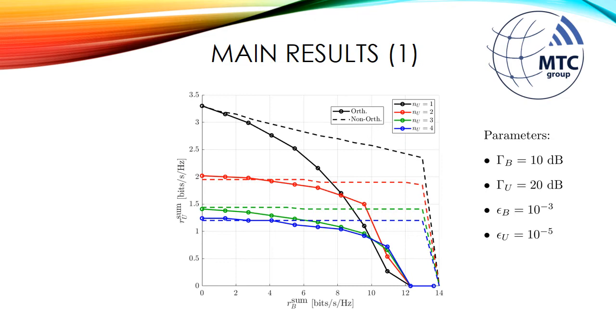To evaluate the performance of both slicing strategies, we plot the pairs of maximum achievable sum rates. For these first results, we set the following parameters. The average received SNRs of the EMBB and URLLC devices are 10 dB and 20 dB, respectively. We also set the reliability requirements for both services. In this case, 10 to the power minus 3 for EMBB and 10 to the power minus 5 for URLLC.